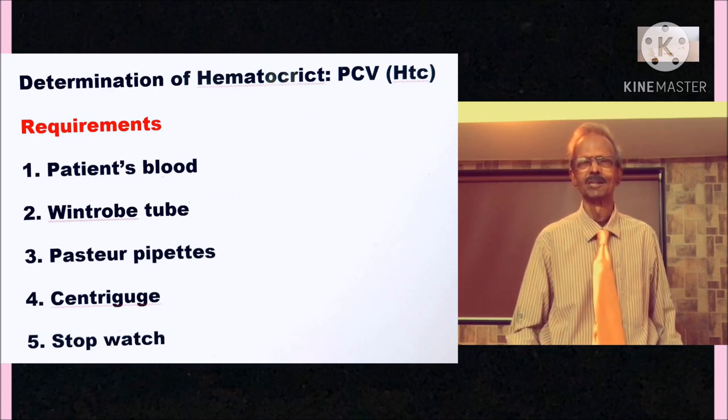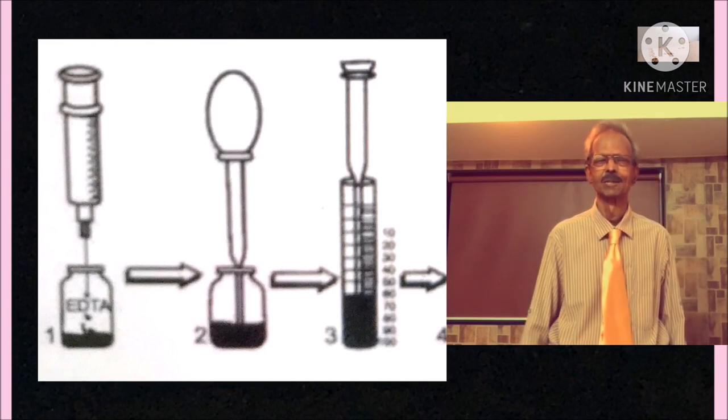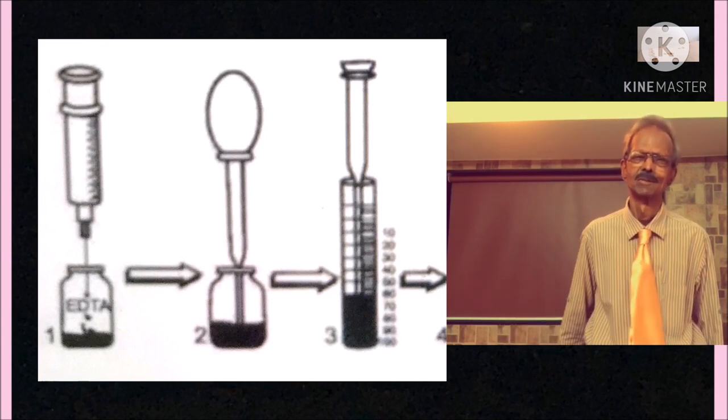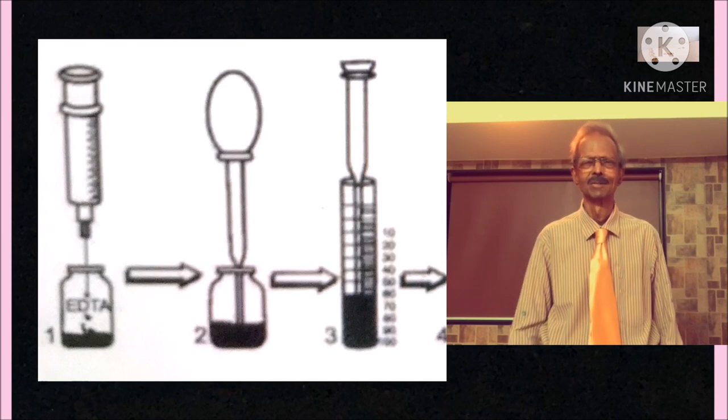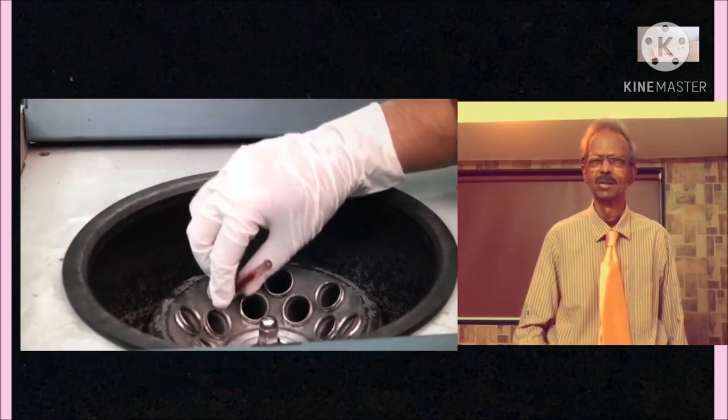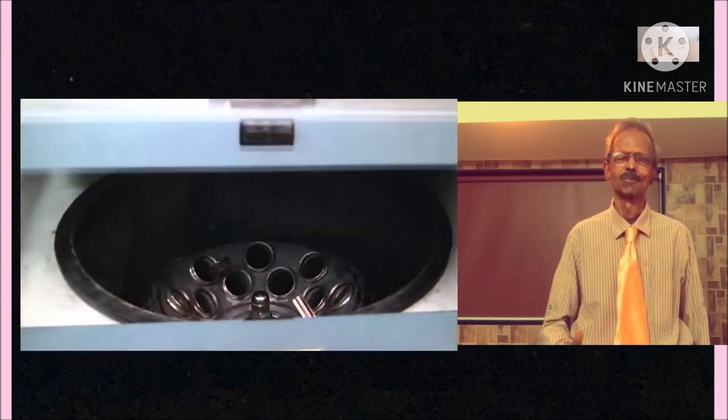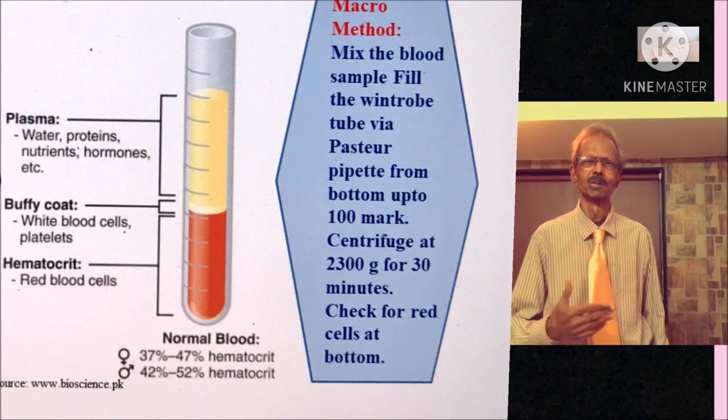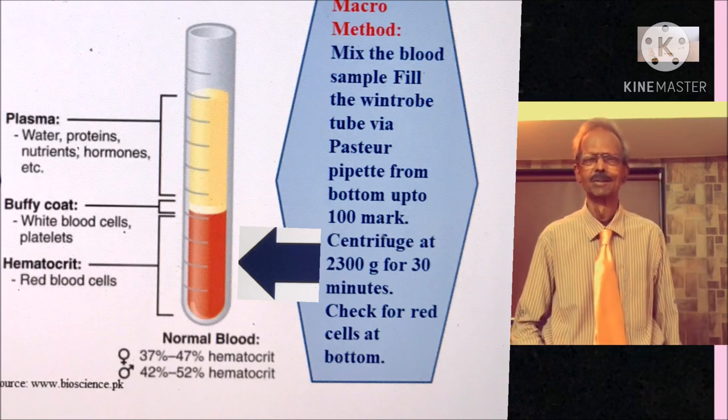And the procedure is like this: Mix the blood sample carefully. Then label a Wintrobe tube. And then fill the Wintrobe tube with blood by using a Pasteur pipette. And prevent mechanical breakdown of red blood cells and avoid trapping of air bubbles. Then place the Wintrobe tube in a centrifuge tube as shown on the left hand side. And use another empty Wintrobe tube filled with water in the opposite cup. And then centrifuge this Wintrobe tube for 30 minutes at 3000 RPM. And afterwards take out the tube and read hematocrit as shown on the left hand side.